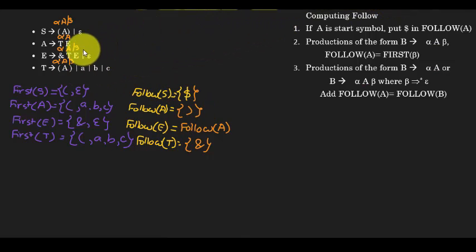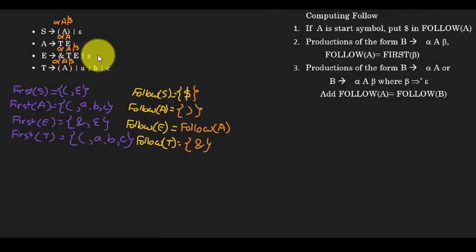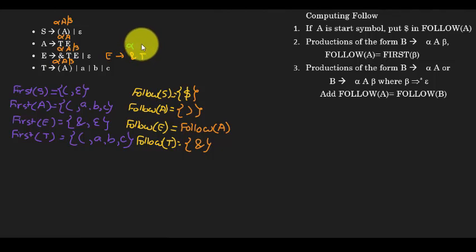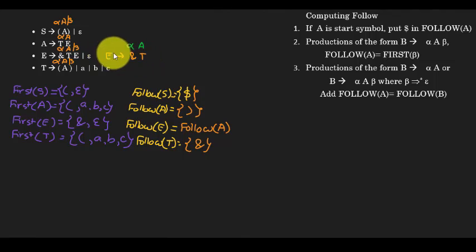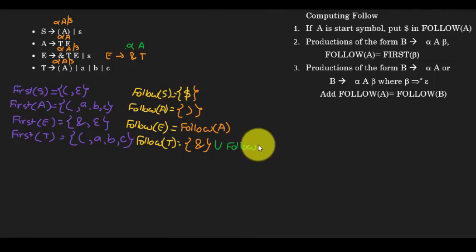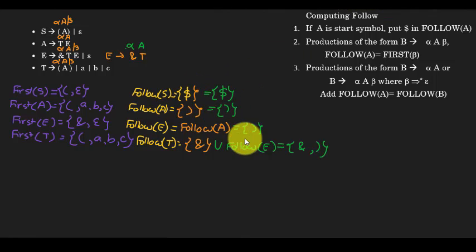Notice that in E → n T E, E can derive epsilon, so we effectively get E → n T, making T the last symbol. This means follow of T also includes follow of E. After unifying everything, these are the final follow sets for all variables in this grammar — combining all the terminals derived from the chained follow rules and the alpha A beta rules.